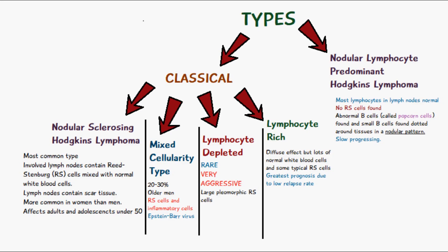Nodular sclerosing is more common in women than men and affects adults and adolescents under the age of 50. The mixed cellularity type occurs in 20 to 30 percent of cases and is more common in older men.